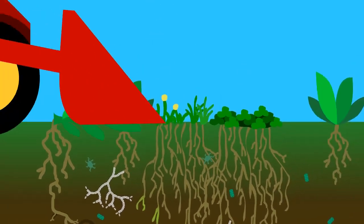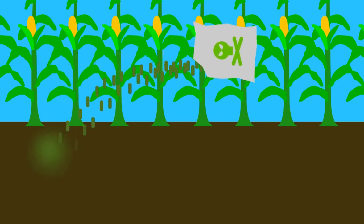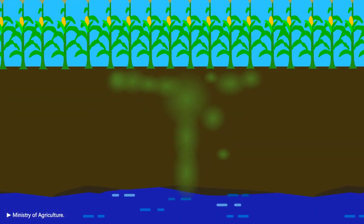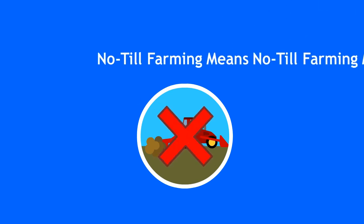Once soil is turned over by a machine, most of these organisms are killed, so the crops must rely on chemical fertilizer, which ends up leaching into the water. Central to no-till farming is to not do that.